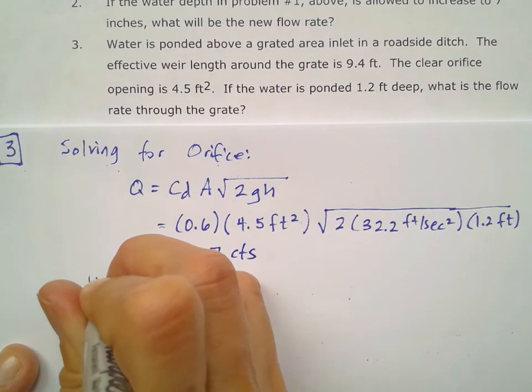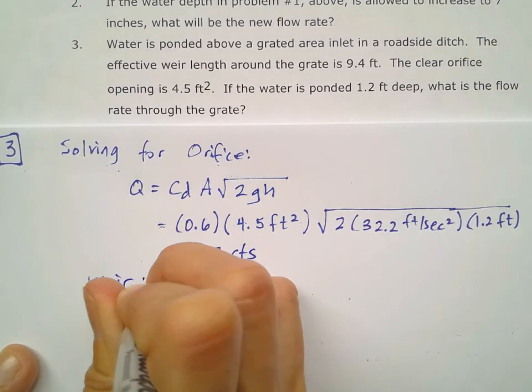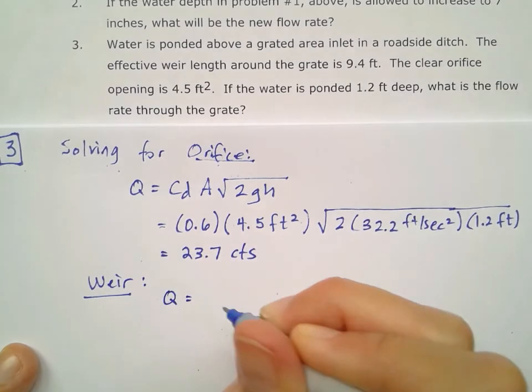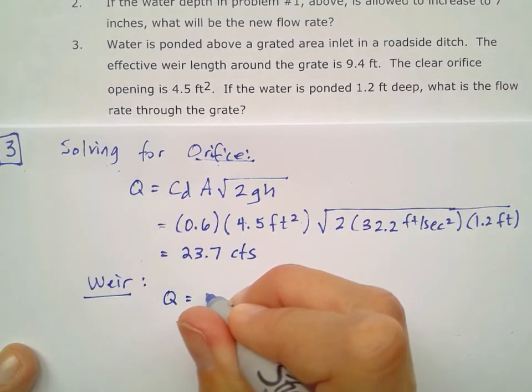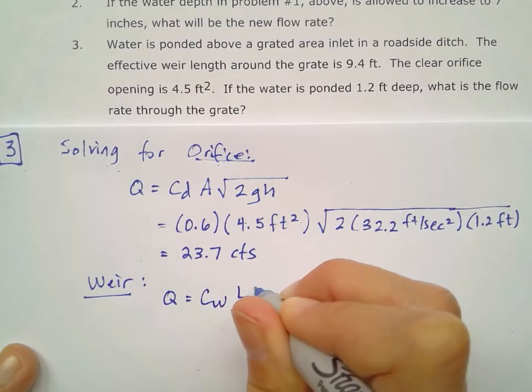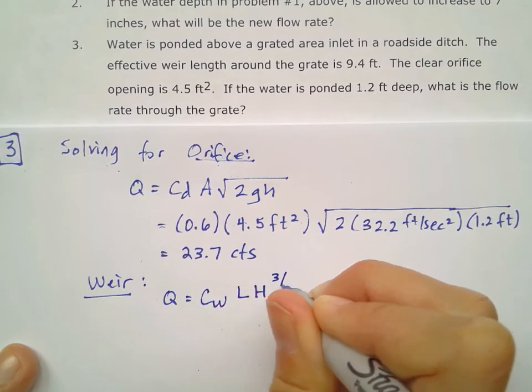But let's go ahead and solve for a weir as well because we are told an effective weir length. For my weir flow, I would have my weir equation where I have my coefficient of my weir times the length of the weir and then that height to the 3 halves.